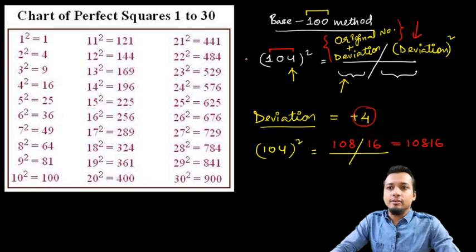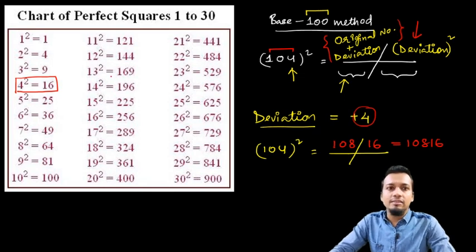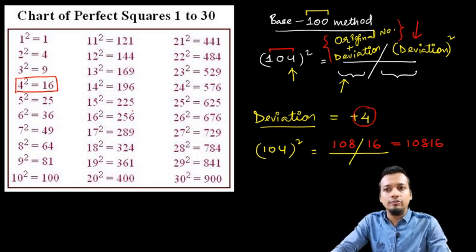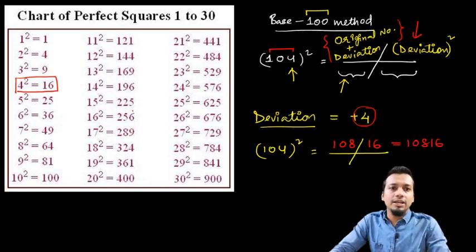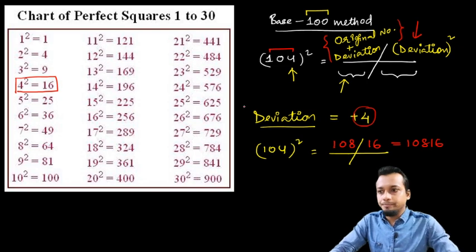Why is the squares list necessary? Because the deviation can be 12, 15, or 17, and you need to know the square of the deviation. So to be on the safe side you should know the squares from 1 to 30. Let's go to one more example.